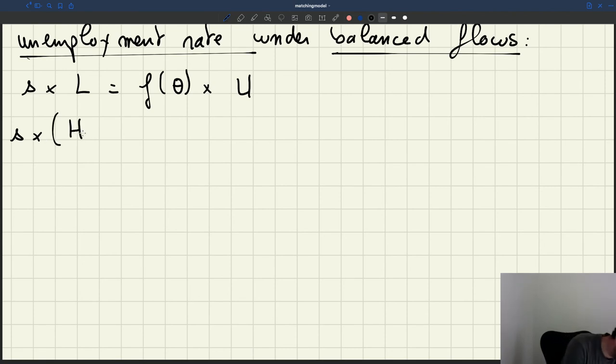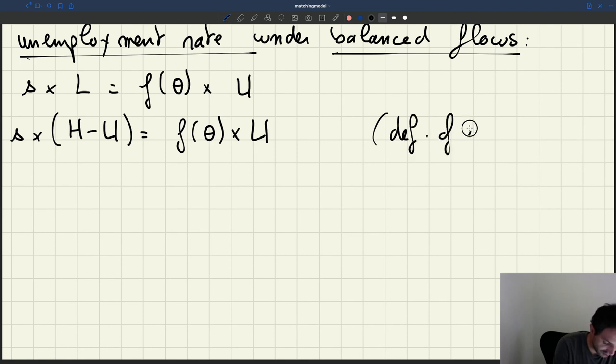Because people in the labor force who are not unemployed are employed. So we can write it like this. L is just H minus U and that's equal to F of theta times U. So this is just using the definition of the labor force and employment. So here we just use what it means to be employed.